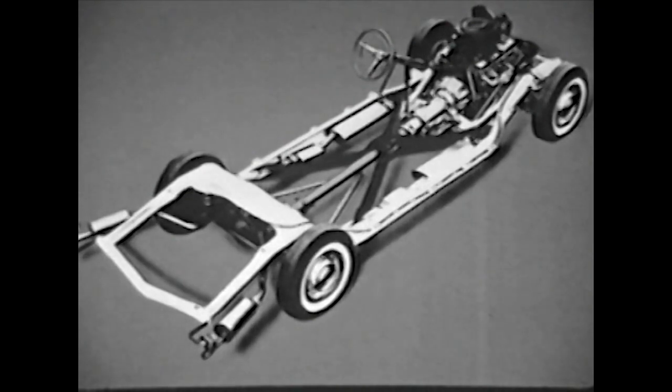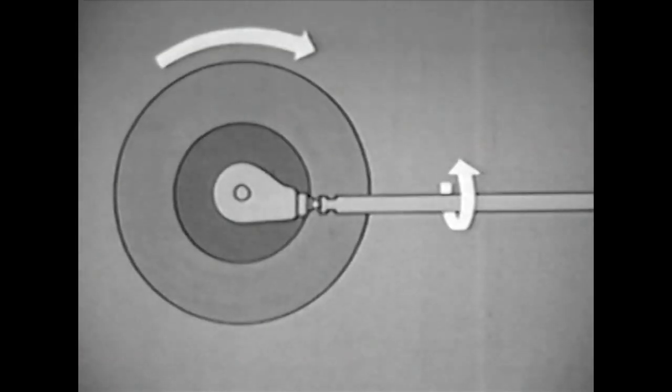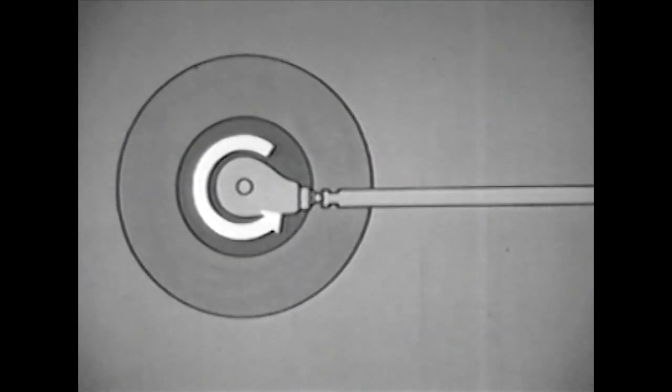The tremendous thrust developed by an engine is transmitted as a turning or twisting force along the propeller shaft through the differential to the rear axles. The twisting force turns the rear wheels and moves the car forward. Here is where a basic law of physics takes effect: this twisting force is accompanied by an equal counter force or reaction in the opposite direction. This means the rear axle housing wants to turn backward.